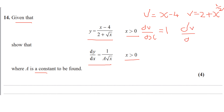And dv/dx will equal a half x to the minus half. Remember, the power comes down as a multiplier and the power reduces by 1. So it's a half x to the power of minus half.